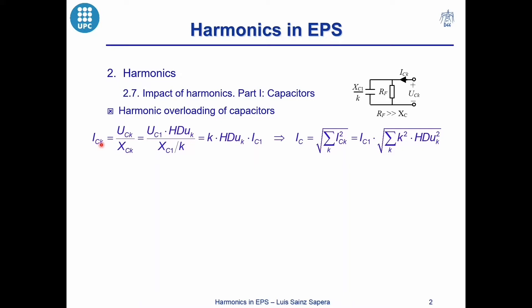These harmonic currents increase the RMS value of the capacitor current. If the supply voltage does not contain harmonics, the RMS value of the capacitor current is equal to the fundamental current. While if the supply voltage contains harmonics, the capacitor current depends on the fundamental current by a factor depending on the square of the harmonic order and the harmonic voltage distortion.